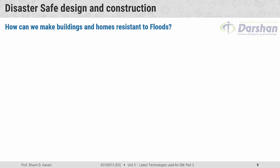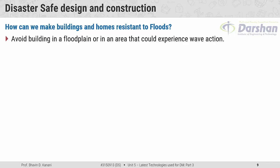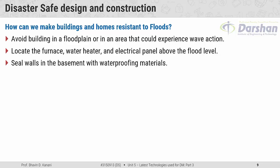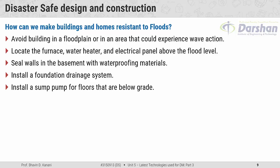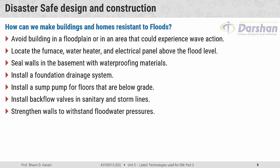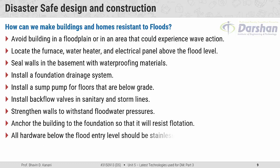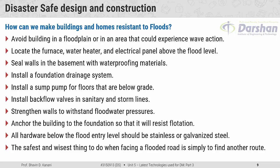How can we make buildings and homes resistant to floods? Avoid building in a flood plain or in an area that could experience wave action. Locate the furnace, water heater, and electrical panel above the flood level. Seal walls in the basement with waterproofing material. Install a foundation drainage system and a sump pump for floors that are below grade. Install backflow valves in sanitary and storm lines. Strengthen walls to withstand flood water pressures. Anchor the building to the foundation so that it will resist flotation. All hardware below the flood entry level should be stainless or galvanized steel. The safest thing to do when facing a flooded road is simply to find another route.